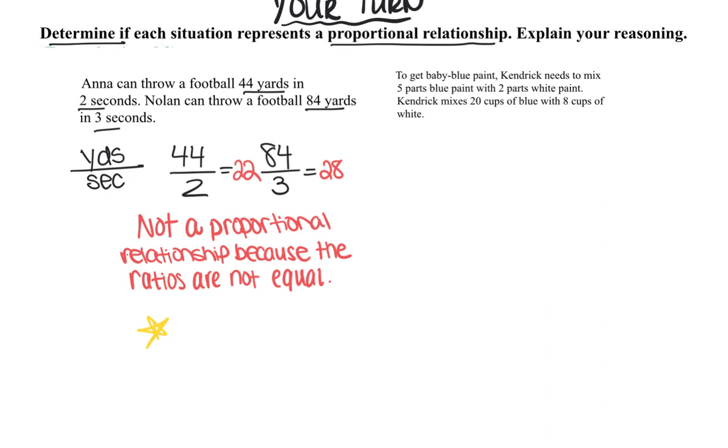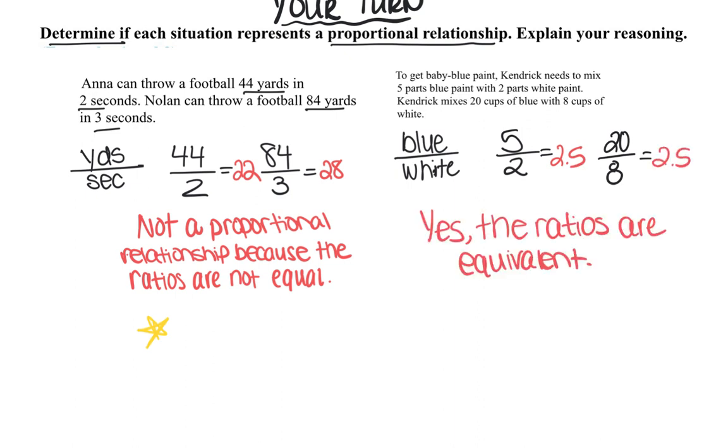Let's try the next one. To get baby blue paint, Kendrick needs to mix five parts blue paint with two parts white paint. Kendrick mixes 20 cups of blue with eight cups of white. Does this represent a proportional relationship? Since both of these divide out to equal 2.5, that means our ratios are equal. And yes, it represents a proportional relationship. Give yourself a star if you got this one right as well.